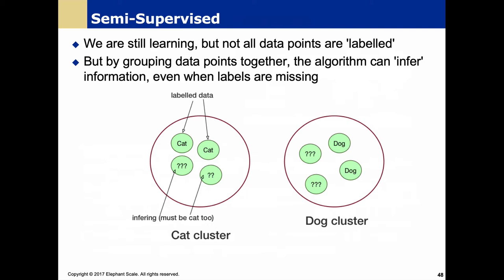Semi-supervised learning involves some labeled data and some unlabeled data. It turns out unlabeled data together with labeled data can be more effective than labeled data alone. It works by combining clustering with supervised methods. For example, if we have some labeled cats and a bunch of other data points clustered right around the cats, it's reasonable to assume those unlabeled points are also cats. Having this information helps us understand the boundaries and nature of the cluster.